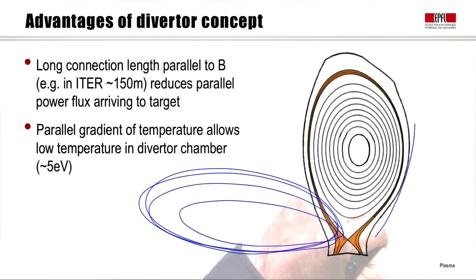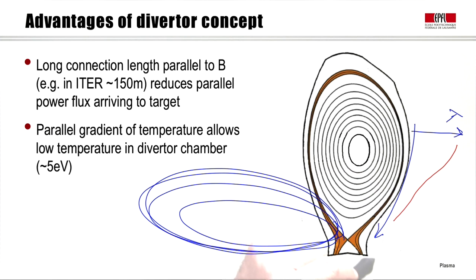The fact that the connection length is so long gives us time to reduce the power flux arriving at the target. It also enables a temperature gradient in the parallel direction — as I approach the target plates, the plasma gets colder and colder. In a well-designed configuration, we can have pretty low temperature in the diverter chamber of only a few eV, although we have thermonuclear temperature in the core.